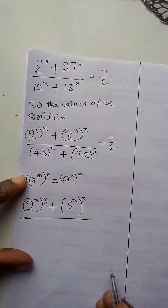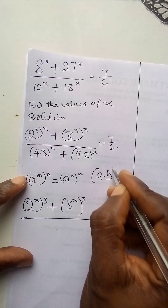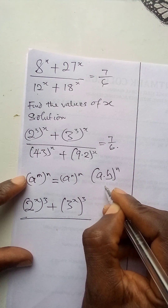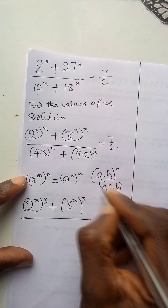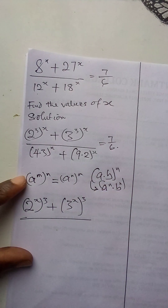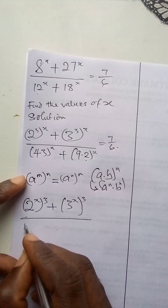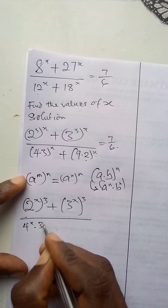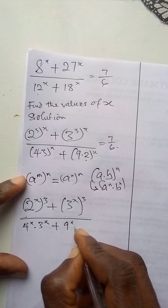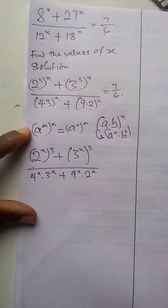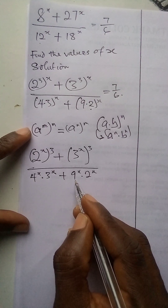Also in indices, if we have a times b to the power n, it is the same as a to the power n times b to the power n. Applying this law to the denominator: 4 to the power x times 3 to the power x, plus 9 to the power x times 2 to the power x. Now I'll express 4 as a number in base 2 and 9 as a number in base 3.